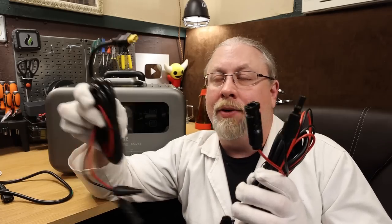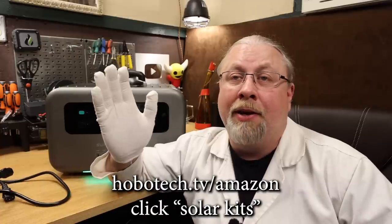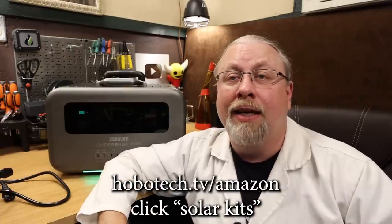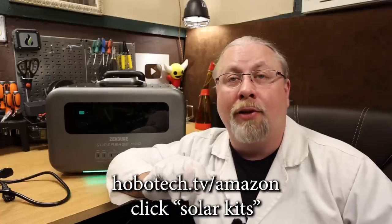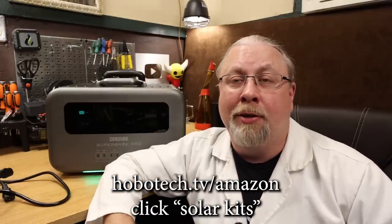Well another thing that Zendure allows that Jackery doesn't is use of your own solar panels because they do include these adapters with MC4 on them. Jackery doesn't. That means you can literally use any third-party panel you want as long as it's MC4. Now what am I going to recommend? If you just want folding solar panels, just get the ones from Zendure because you know they're going to work with the product and you can get a bundle deal. Say you want to get some flex panels or glass panels or a suitcase kit, just go to hobotech.tv/amazon and click on solar kits for lower priced options. I'll go ahead and put the link below in the description.